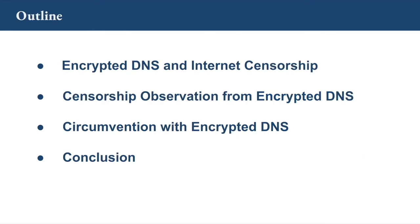This is the outline of my talk. First, I will briefly introduce the background of encrypted DNS and internet censorship. Then, I will present two experiments: first, our censorship observation from encrypted DNS, and second, how effective encrypted DNS can be used to circumvent internet censorship. And in the end, I will conclude my talk.